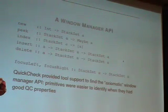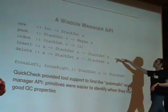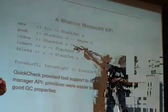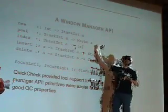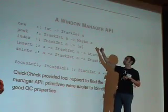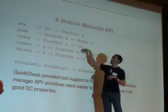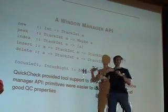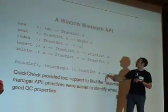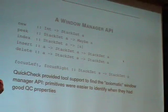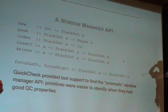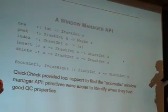Very simple API: create a new window manager, you peek into the window manager data type, extract whatever element's currently visible, you can index it to get back all the elements on the current workspace, and you can insert and delete windows. That's basically the API of a window manager. And you can move focus around, which means shifting the cursor around.